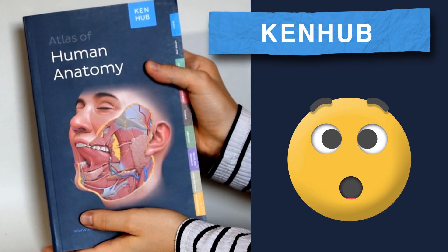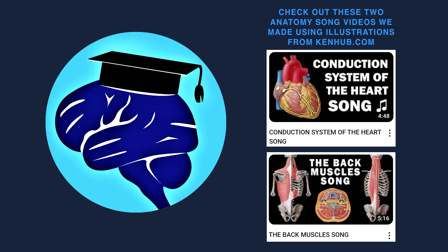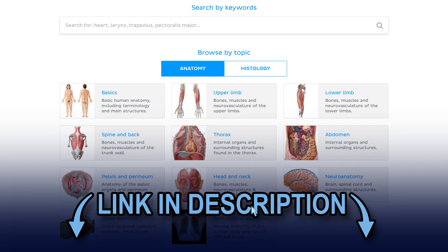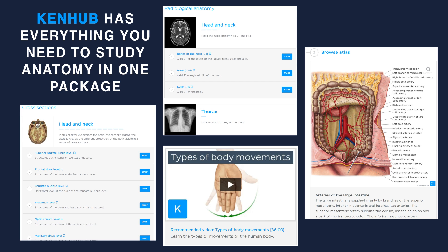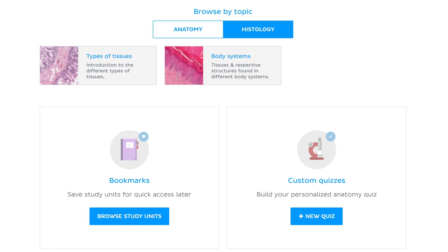Our sponsor, Kenhub, just sent us this amazing atlas of human anatomy. We at Neural Academy have talked about Kenhub on this channel before. We are huge fans, and if you haven't seen their site, go check out the link in the description below. We believe that they are the best anatomy resource out there, with unparalleled illustrations and complete, in-depth information on anatomy and histology.